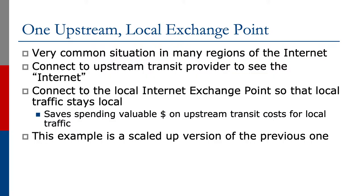We're now going to look at the next example. We're scaling up the previous one, where the network is connecting to the upstream provider and several local peers through an Internet Exchange Point. This is a very common situation in many regions of the Internet. You connect to your transit provider to see the whole Internet, and you connect to the local Internet Exchange Point so that local traffic stays local, for the same reasons as earlier.